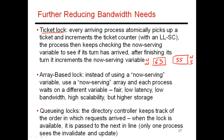So when you show up, what you're going to do is a load-link that reads this value. You're going to see that it is 63 that's currently in wait. You're going to increment it and store, writing a 64 in over here. So in an atomic operation effectively, I'm reading my current turn number and incrementing this so that the next thread sees that it is thread number 64.